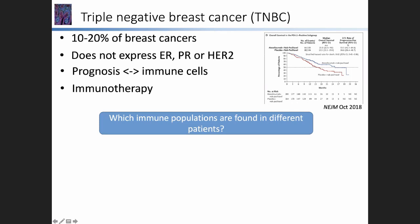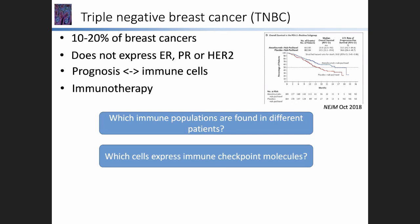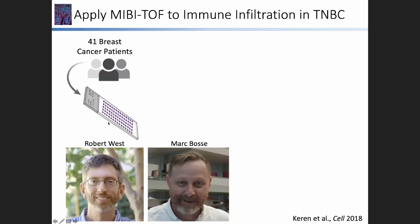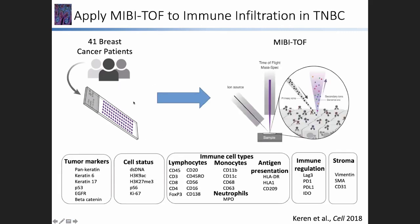We wanted to ask which immune populations are found in these different patients, which cells express different immune checkpoint molecules, and ultimately try to understand which patients would benefit from therapy. We teamed up with Robert West from Stanford and Mark Bosa from the Angelo Lab, compiled a TMA of 41 different breast cancer patients, and profiled them by MIBI using a panel of 40 different markers — including tumor attributes like p53 and EGFR — with a large fraction dedicated to immune cell types and four immune regulation molecules: LAG3, PD1, PDL1, and IDO, all under investigation for immunotherapy in breast cancer.